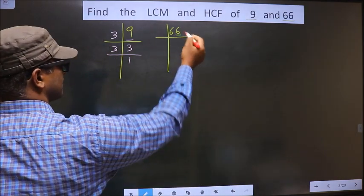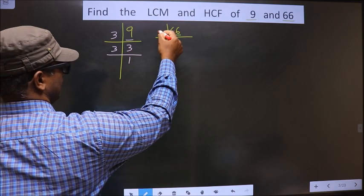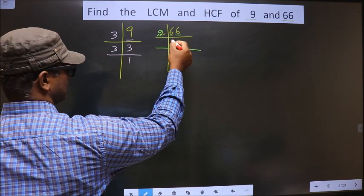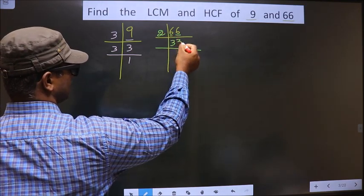Here we have 66. Last digit is 6, which is even, so we take 2 here. Now first number is 6. When do we get 6 in 2 table? 2, 3 is 6. Next number is 6. When do we get 6 in 2 table? 2, 3 is 6.